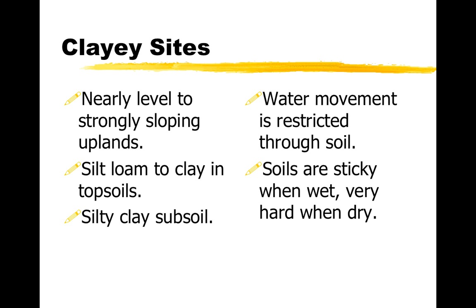The final site is a clayey site. Clay sites can be flat or steep, but the key is that they have a lot of clay — silt loam to clay in the topsoil and a silty clay in the subsoil. There's so much clay that water movement is restricted and won't go through the soil very easily, so this soil is usually very dry. When it does get wet, it's very sticky; when it's dry, it's very hard. Water movement and root movement are very restricted. Usually smaller, poor quality plants are found on clay sites.